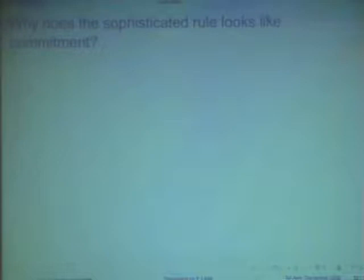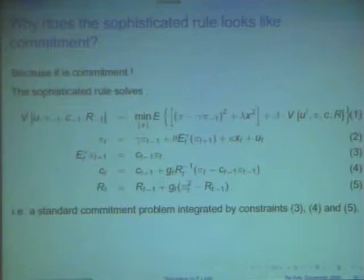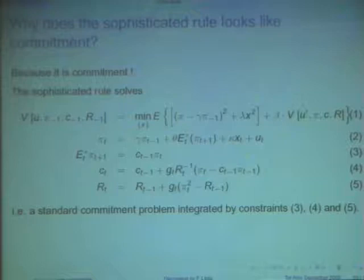But, now, first point. Why does the sophisticated rule look like commitment? This is a question that they have. Well, my answer is, because it is commitment. Now, you shouldn't do this in presentations with too many questions, but here I need it. This is the sophisticated rule. It's minimization of 1, subject to 2, 3, 4, and 5. Now, 1 and 2 is a standard commitment problem.